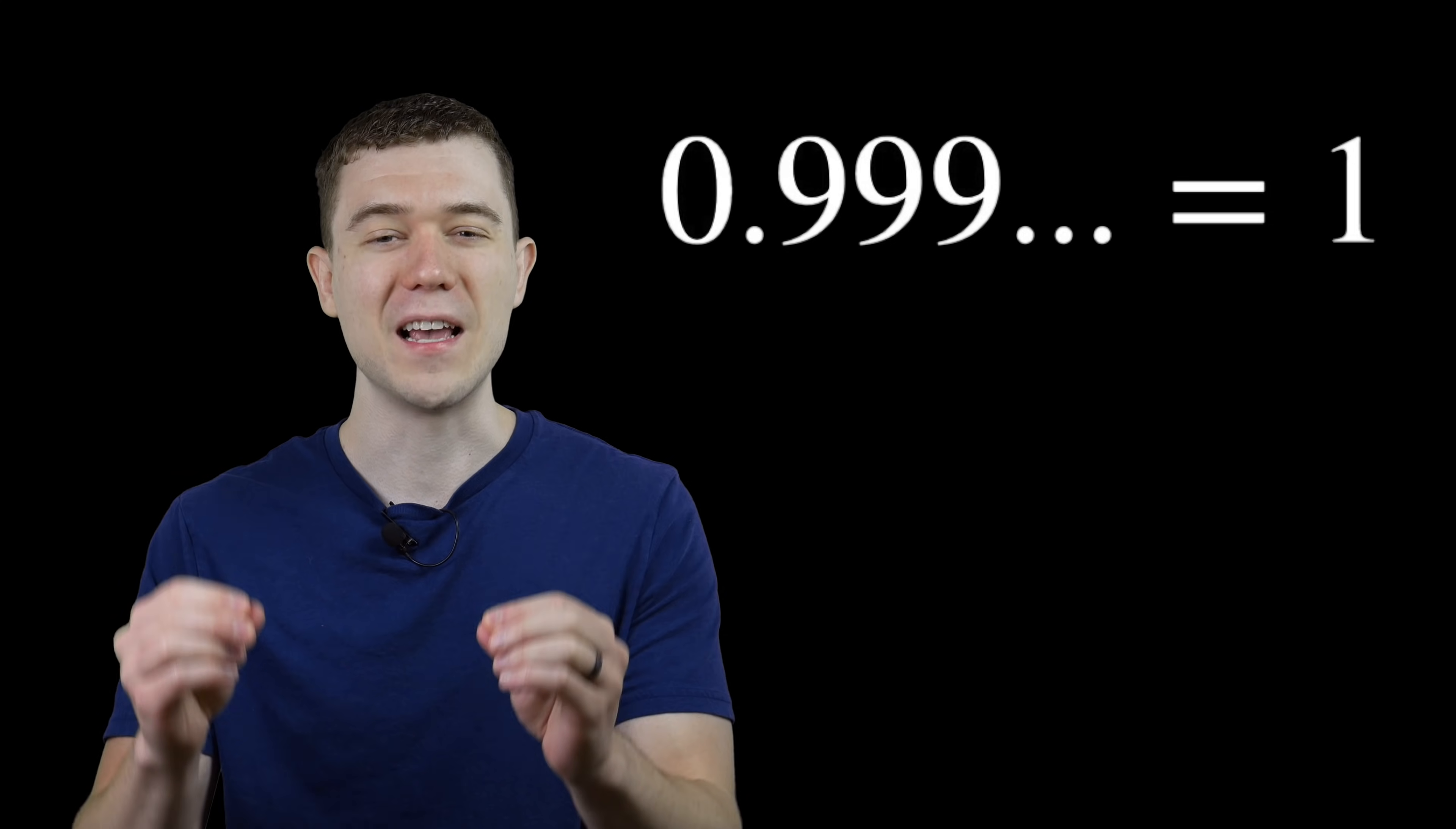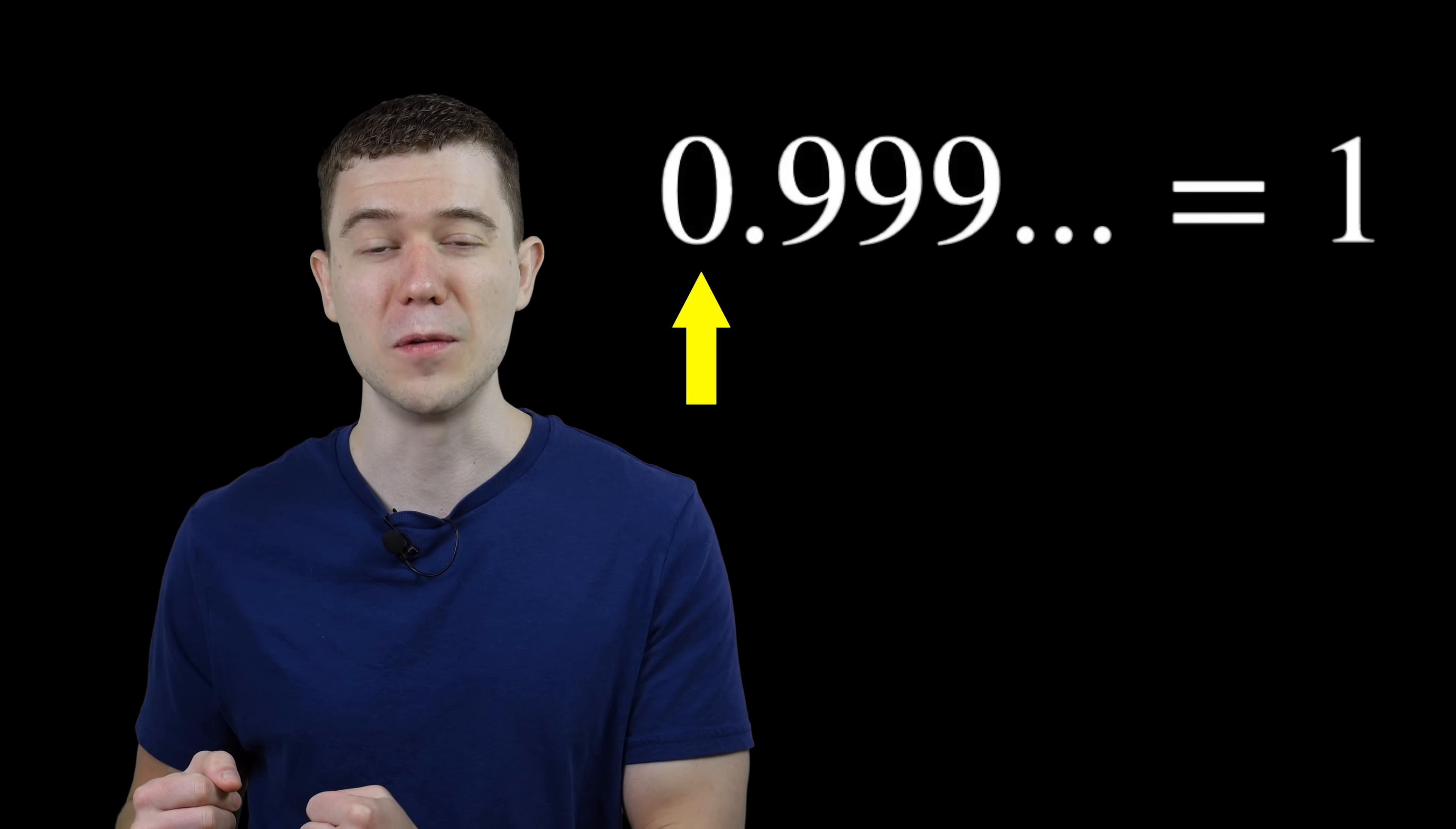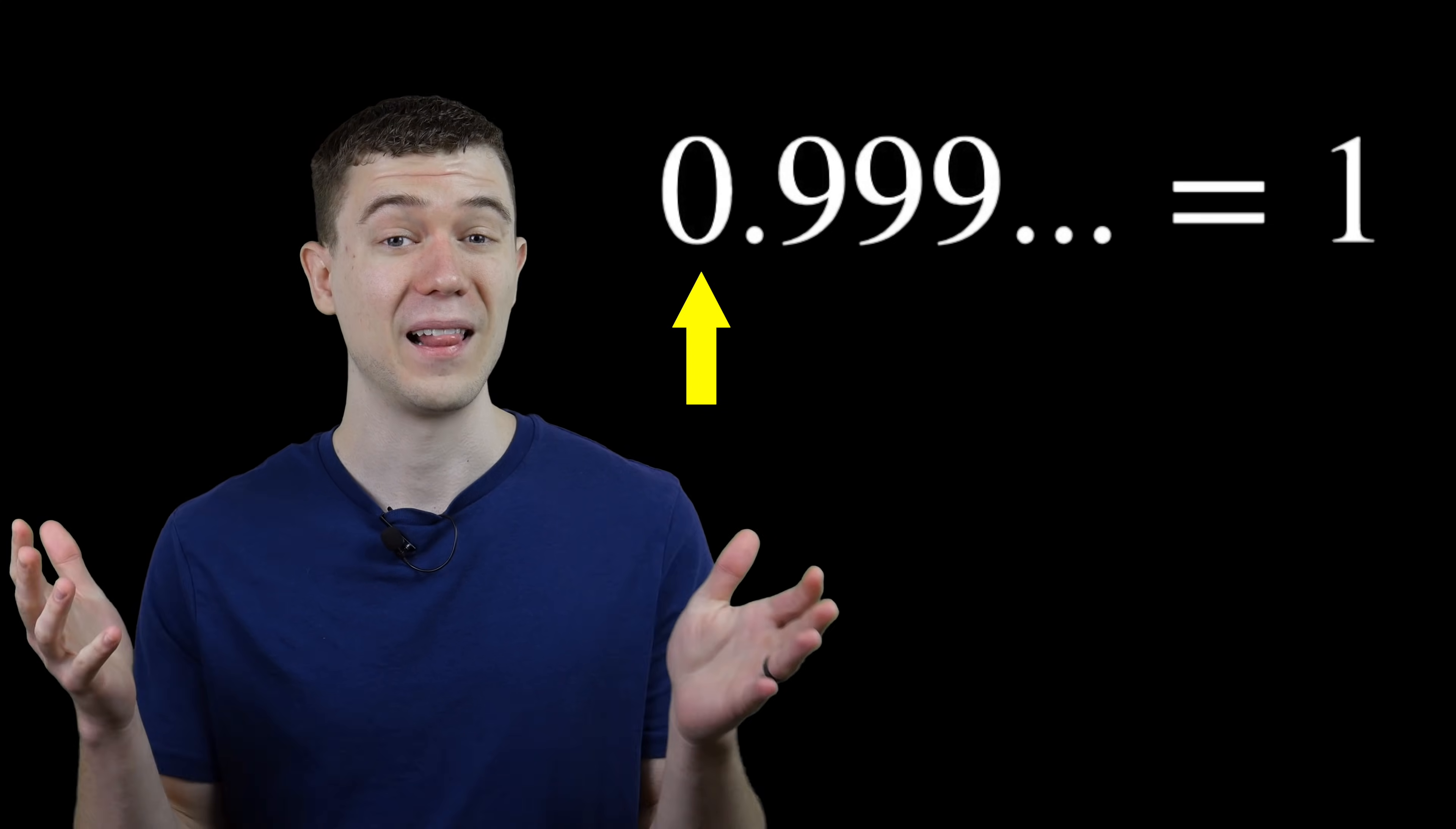But even after numerous proofs like this, you just can't accept that 0 out front of the decimal point and think that these numbers are in fact the same. Let's do a formal proof so you have no choice but to accept this result.